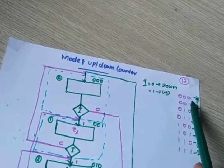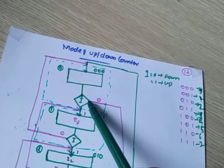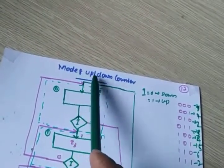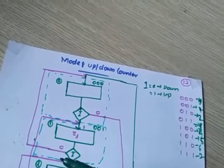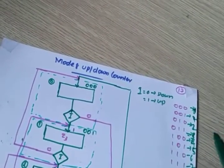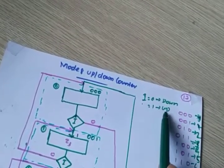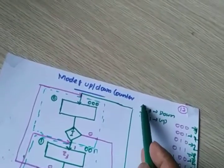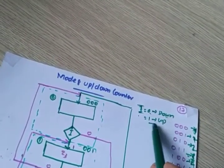Initial state is 000. Here we need a condition box. We need to design a mod-8 up-down counter. The same circuit should act as both up counter and down counter. So while designing the up-down counter, we put a common input — if it is 0, down counting; if it is 1, up counting. I am taking 'i' as the decision-making input: if i is 0, down counting; if i is 1, up counting.